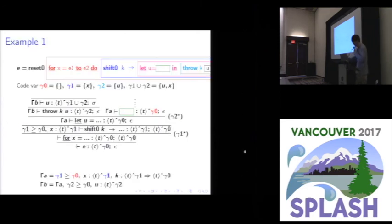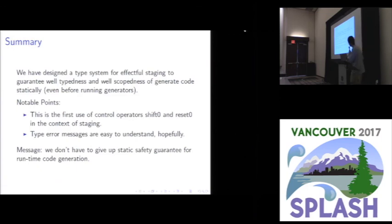So maybe no one wants to read this. So please read our paper. And I just jump to this. So we have designed a type system for effective staging to guarantee scope correctness. And I say that this is the first use of delimited control for MetaML-style staging. Hopefully our system can generate easy to understand type error messages. And this is all. Thank you.